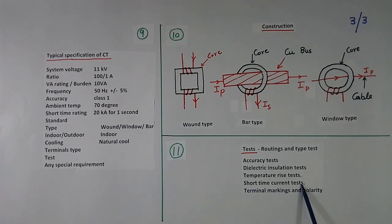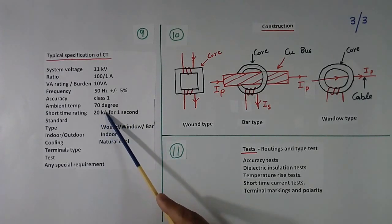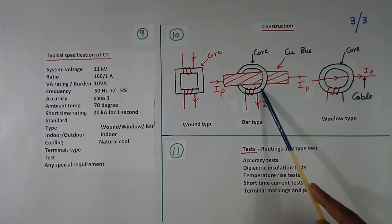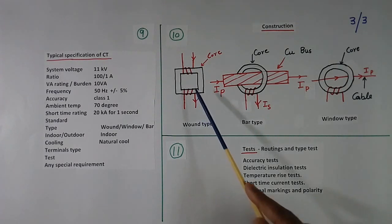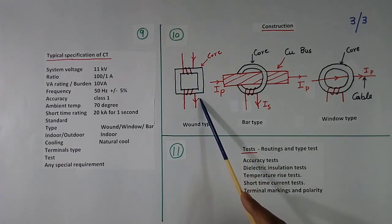Then short time current test. Here, suppose we write this. Then we have to give 20 kA in the primary for 1 second and see whether the CT is working or not, it is failing or not. Then terminal marking and polarity. Means it is marked properly. This is primary and this is secondary. This is terminal 1, this is terminal 2. Like that.